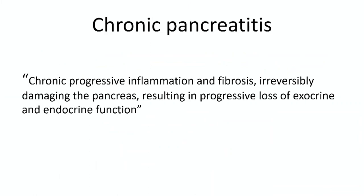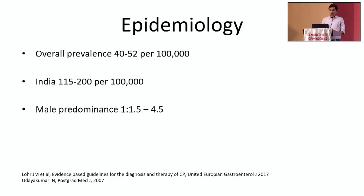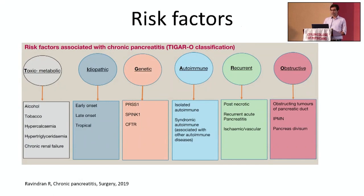Chronic pancreatitis is a chronic progressive inflammation and fibrosis which leads to progressive loss of exocrine and endocrine pancreatic function due to irreversible damage of the pancreas. The overall worldwide prevalence is about 50 per 100,000. In South Asia the prevalence is unfortunately higher, though we lack local data. There is a slight male predominance. The most common risk factor is alcohol, followed by tobacco use, idiopathic chronic pancreatitis including tropical pancreatitis, autoimmune pancreatitis, and obstructive causes like pancreas divisum.